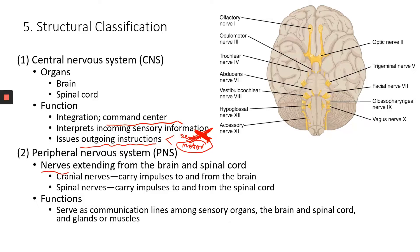You have nerves coming or extending from the brain — those are called cranial nerves. We have 12 pairs of cranial nerves. Both of these nerves actually innervate your brain and your neck area. But there is one nerve, the vagus nerve, that extends into your thoracic cavity and your abdominal cavity.